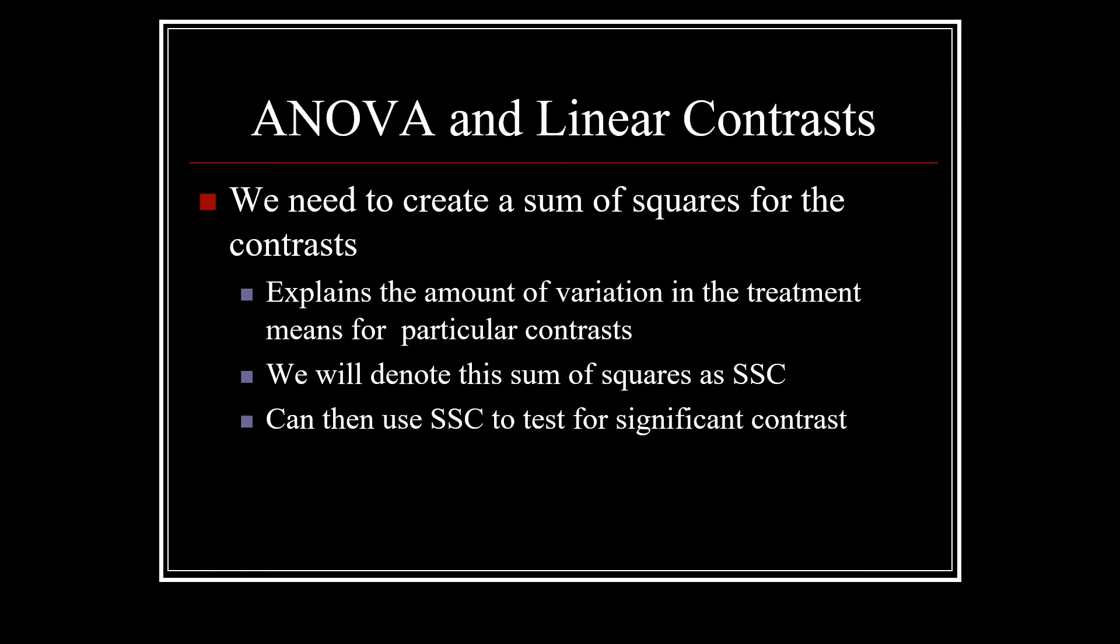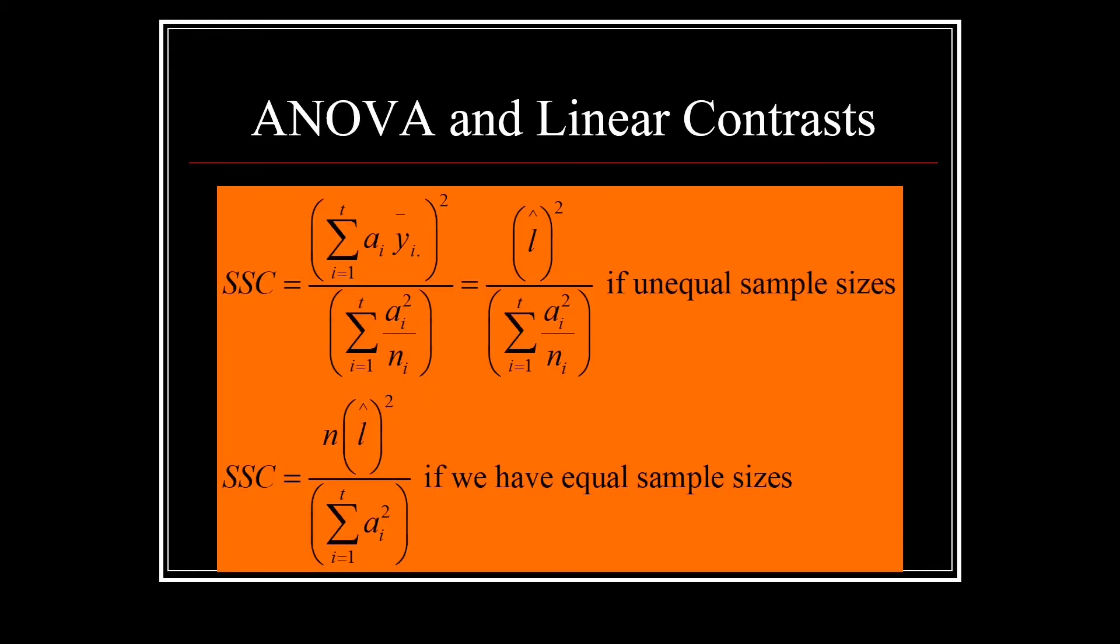We also need to create a sum of squares for our contrast because this is going to allow us to test for significant contrast. These sums of squares explains the amount of variation in the treatment means for particular contrasts, and we're just going to denote this sum of squares as SSC. Sum of squares contrast, if we have unequal sample sizes, is going to be the sum across the treatments of a_i times y bar i quantity squared divided by the sum across the treatments of a_i squared divided by n_i. And that is going to simply be l hat squared divided by the sum of the a_i squares over n_i. However, if we have equal sample sizes, then our sum of squares contrast is n times our squared contrast divided by the sum of the a_i squares.